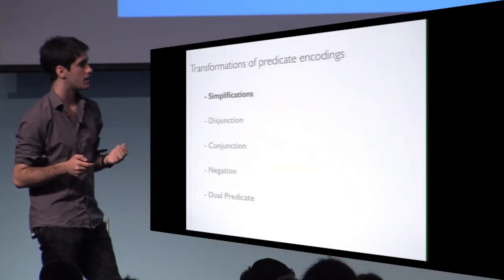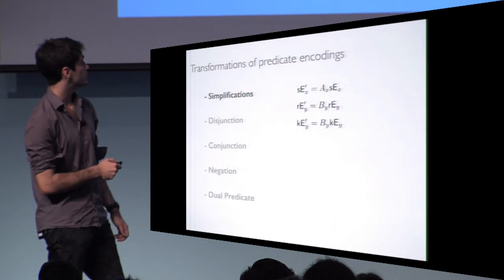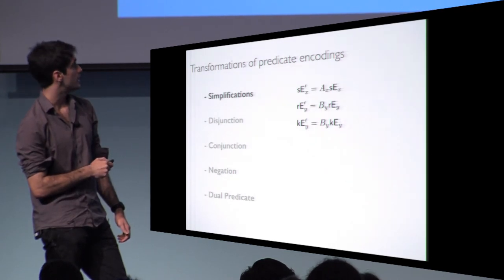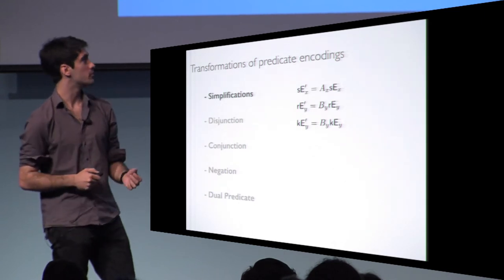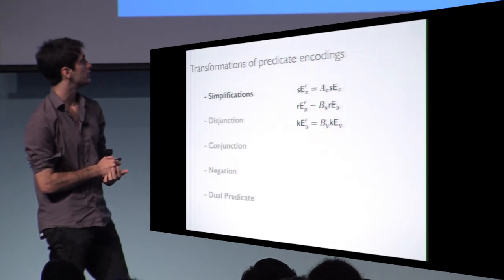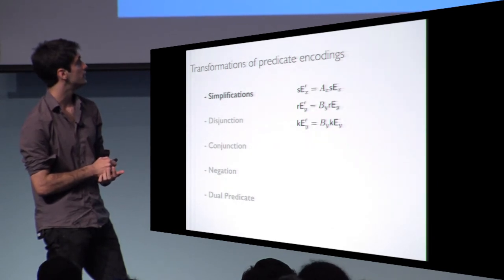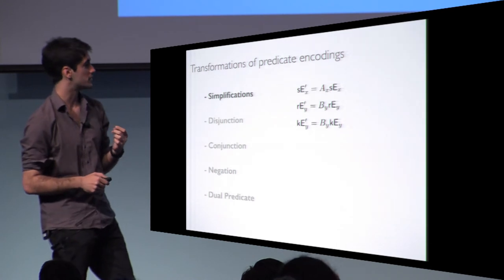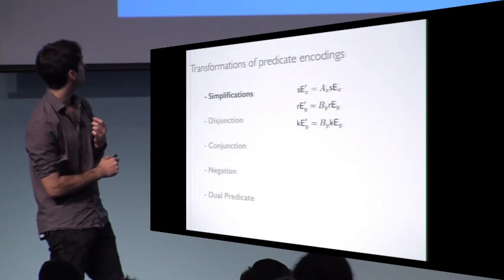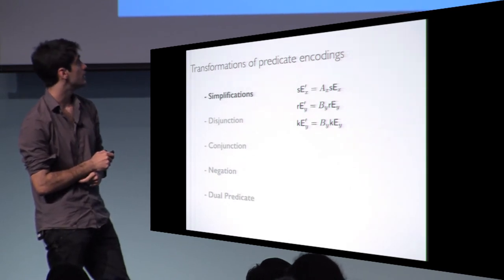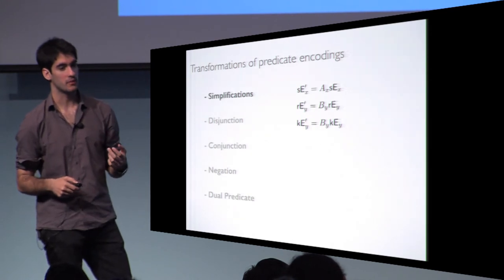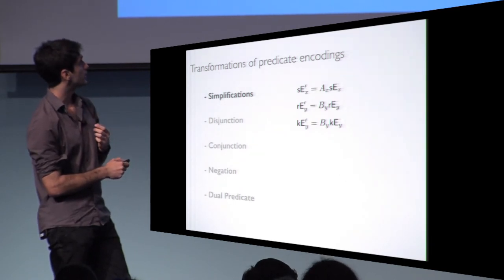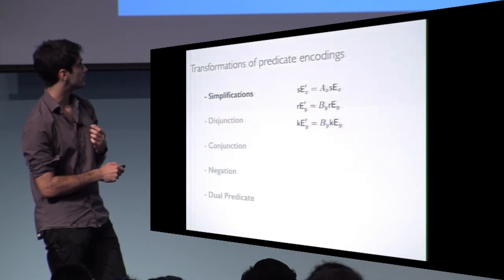One thing we consider is whether we can simplify predicate encodings. The operation we examine is: given three encoding matrices, what happens if we multiply them by matrices A and B to obtain new encodings? We want the implicit predicate to be preserved after multiplication. Our results give the conditions on A and B such that the predicate is preserved. This is useful because if after multiplying you obtain smaller matrices, this translates into performance improvements and savings of group elements. We also consider multiplying from the right.